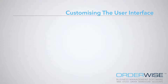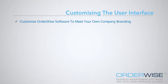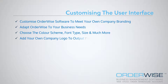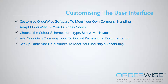So, as you can see, OrderWise provides users with extensive ways in which they can customise the software to meet their own company branding and business needs. From choosing the colour scheme, font type and size, the ability to add their own company logo to output layouts, and setting up table and field names in the data dictionary and much more.